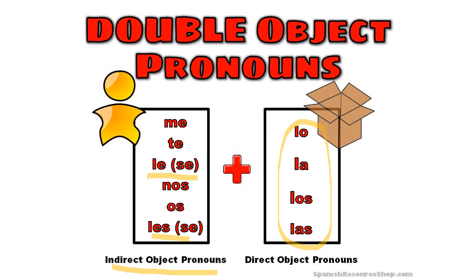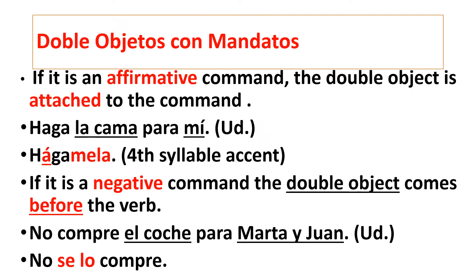So how do we handle commands? If you have a command, we follow the same rule we learned before. If it's an affirmative command, the double object is attached to the command. For example, let's say I'm talking to someone using the usted command and I say, haga la cama para mí — make the bed for me. I can say 'make it for me.' So I start with my indirect object pronoun me, use my command haga, then put my direct object pronoun la — hagámela.